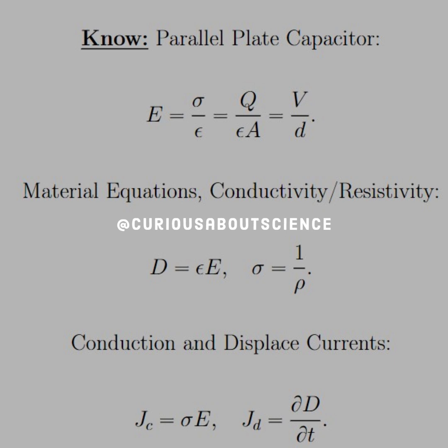And then we also have conductivity and resistivity, or at least how they're related. Here, sigma is conductivity and rho is resistivity. Again, we're running out of letters here, so bear with it. And then we see that the conduction and displacement current densities are Jc equals sigma E, and Jd is equal to the partial of D with respect to time.